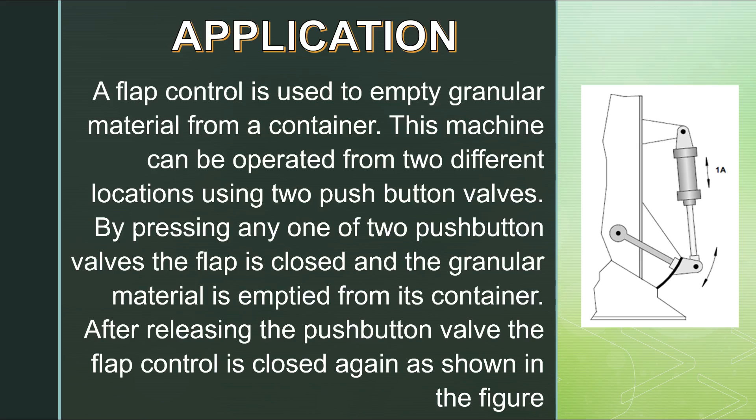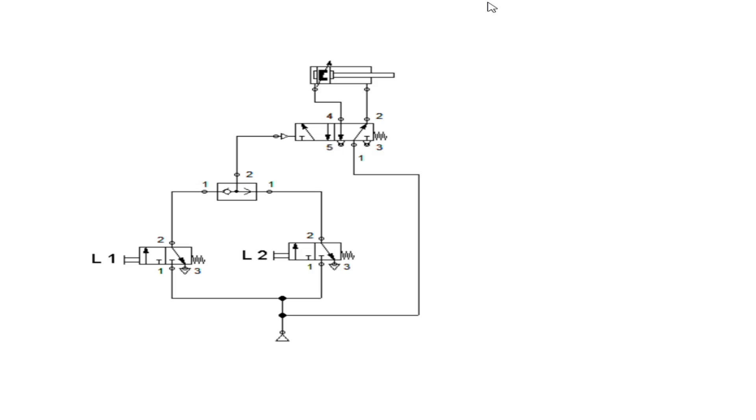After releasing the push-button valve the flap control is closed again as shown in the figure. In the initial position, the piston rod of double-acting cylinder assumes the retracted end position.